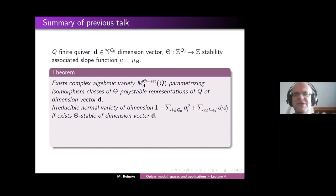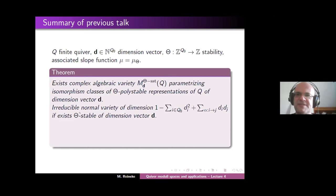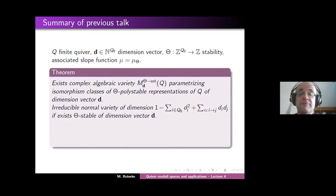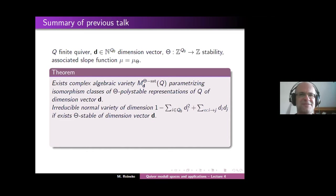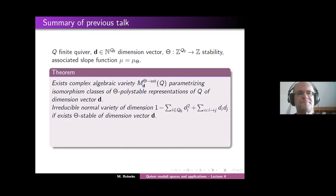There are several ways to check this condition of existence of a single stable representation. One way is to just look at your specific situation and have an ad hoc proof for existence of stable representations. There exists a general solution, but this solution is highly recursive and purely numerical. My advice is if you look at a concrete class of quiver moduli spaces, you better try to find an ad hoc way of constructing a stable representation.